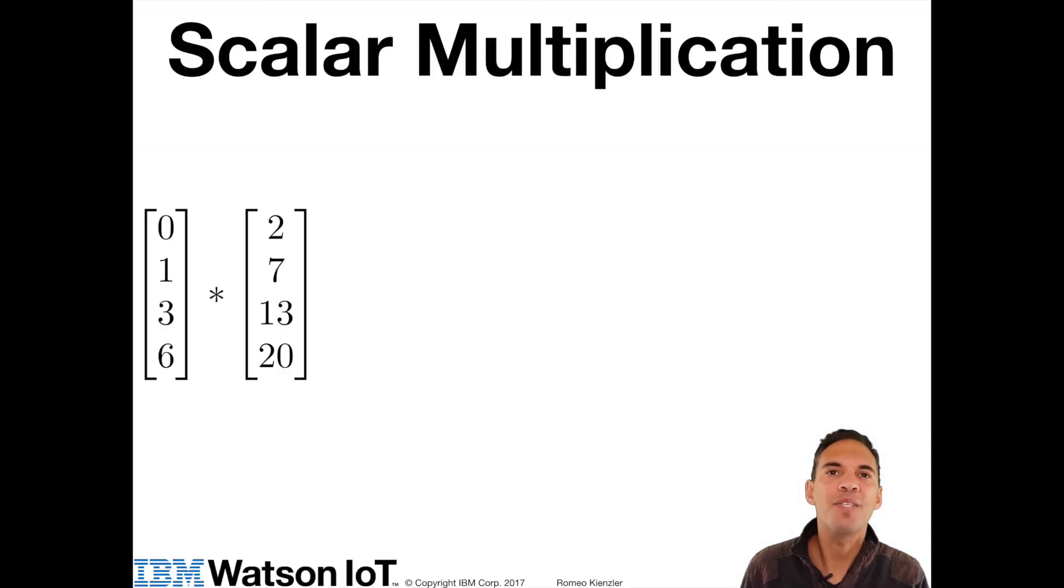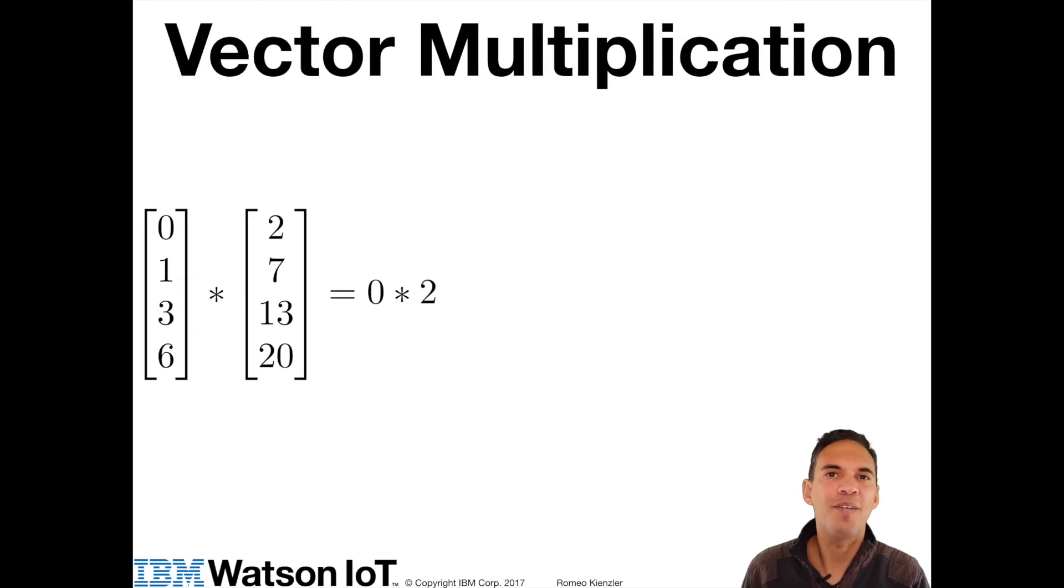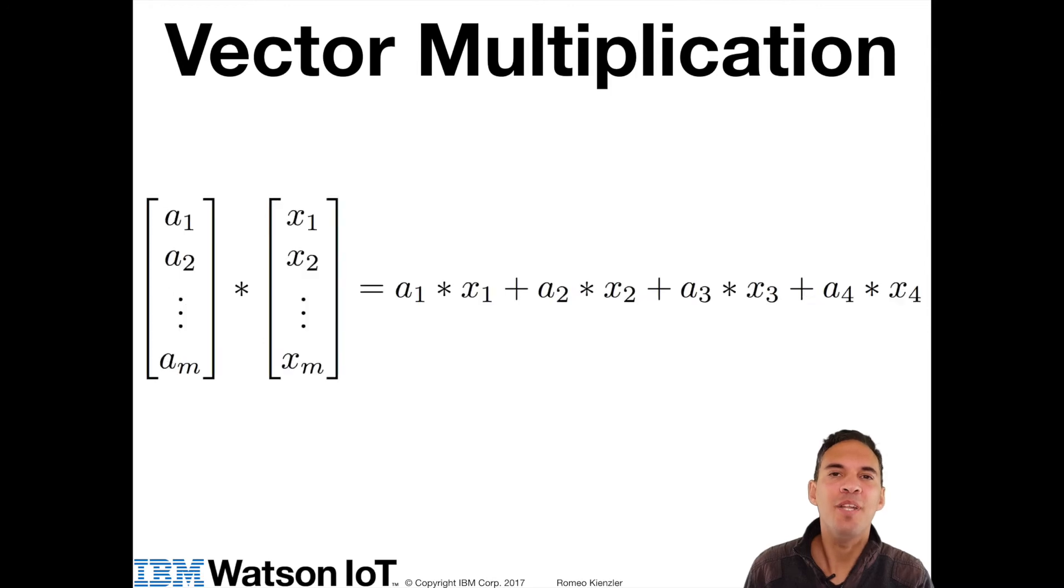But we can also multiply two vectors. Note that the column-wise notation is the most common in math. This multiplication is called the dot product or scalar product because it returns a scalar. We won't cover the cross product or the vector product here. So the dot product simply takes the first element of the first vector and multiplies it with the first element of the second vector. Then it does the same for the second element of the vectors and finally the rest. So now all those intermediate products are summed up and the resulting sum is the solution to the dot product. More generally speaking,